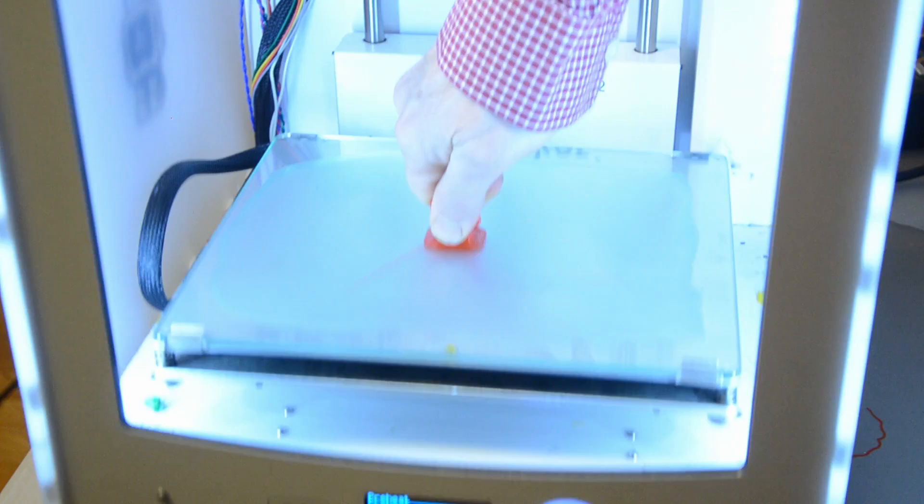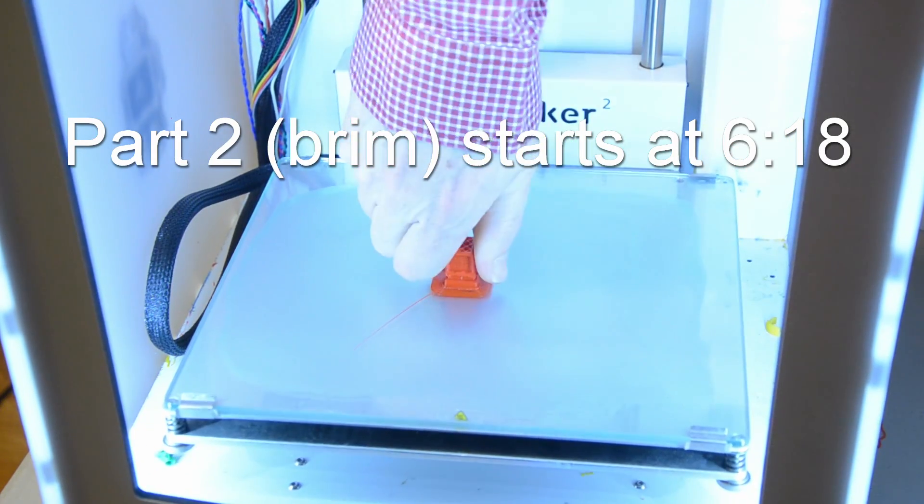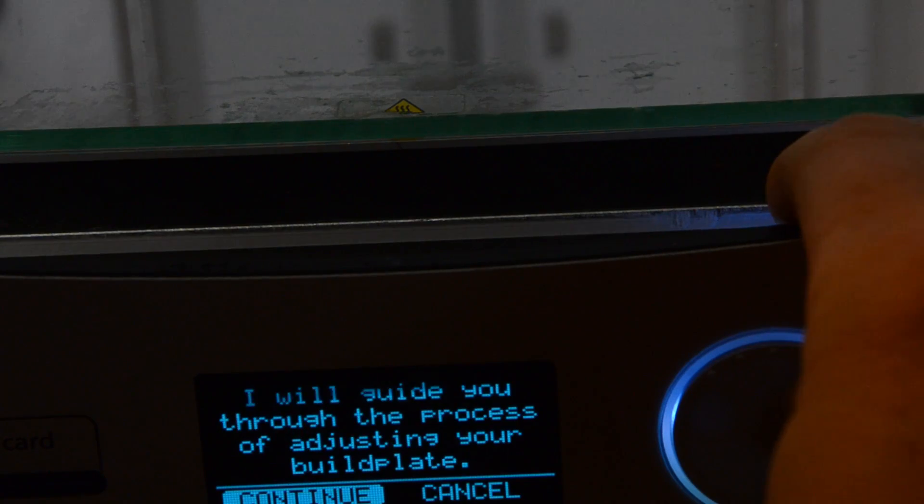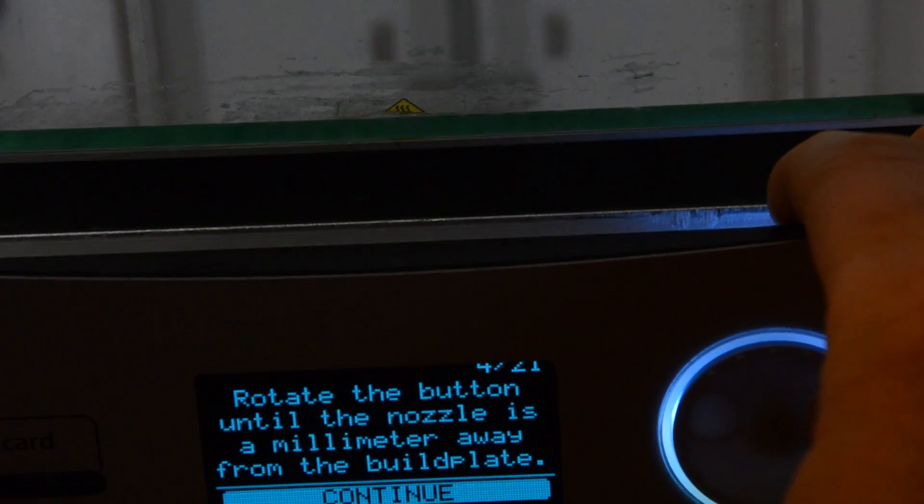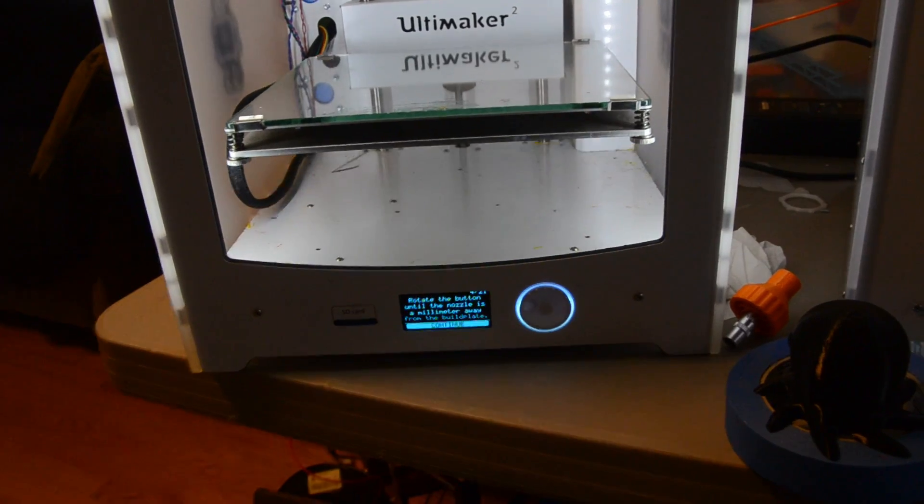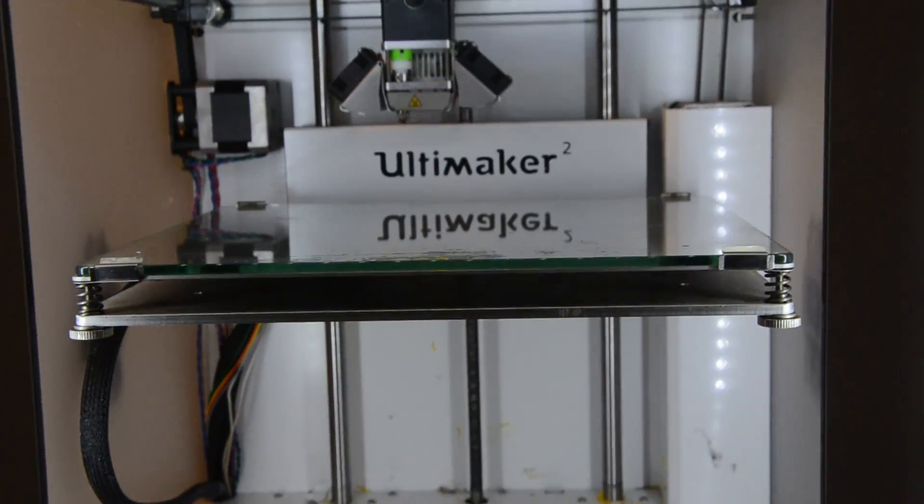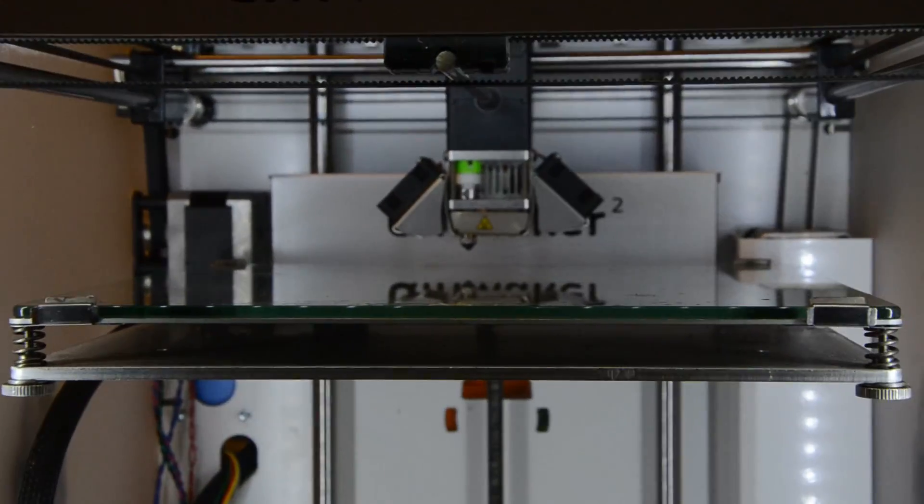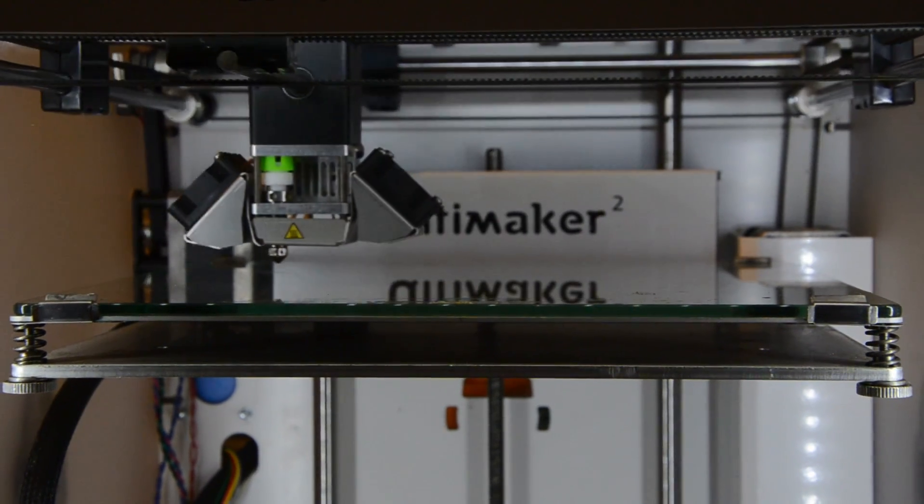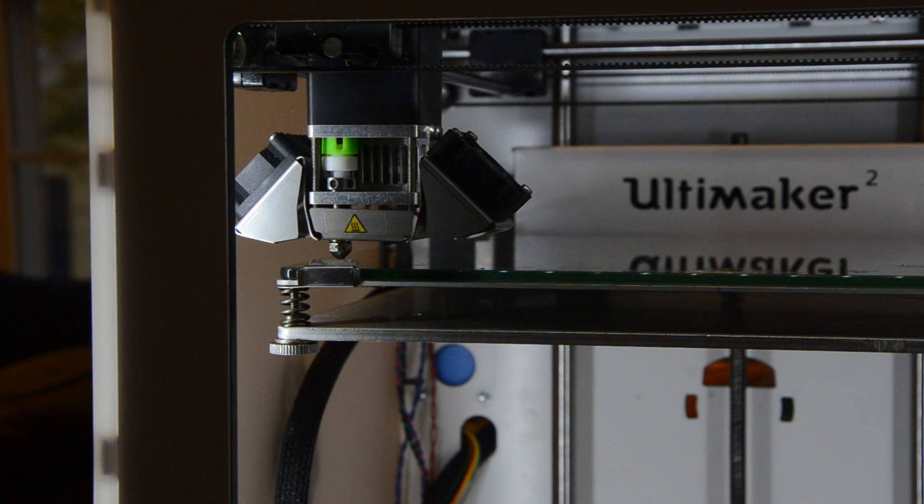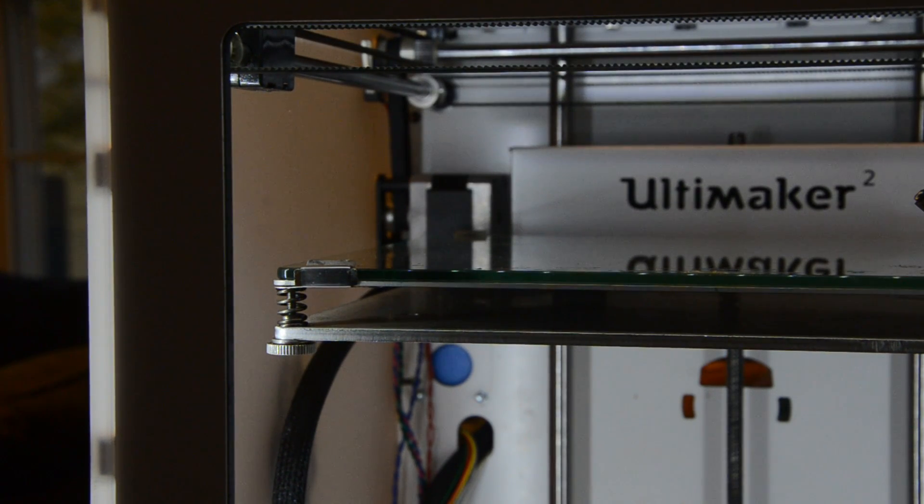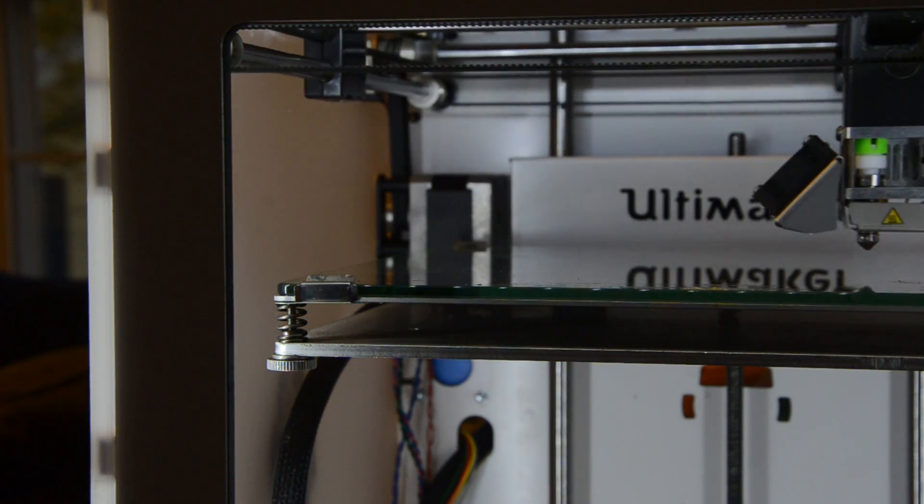Now I'll show you how I level the Ultimaker 2 and 3. If you don't have one of these printers, skip to part 2. This procedure works identically for the Ultimaker 2 or 3 or the 2+. This one millimeter step here isn't really needed. It's only needed if you take your bed completely apart, like if you remove the screws or something like that. So I just kind of fly through this part.